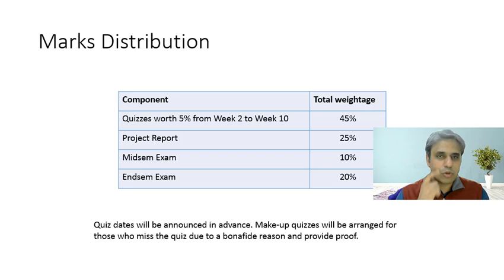Let us come to some of the administrative details related to this course. Firstly, the marks distribution. For this course, I'm planning to have a quiz worth 5% every week from week two to week ten. And so overall nine weeks. So that contributes to about 45% of the course marks. And then we will have a project and the project report will be worth 25 marks. We will also have a mid-sem exam somewhere around 20th, 21st February, which will be around 10% marks. And there will be an end-sem exam, which is 20% marks. So that total is 100%.